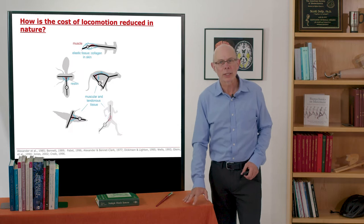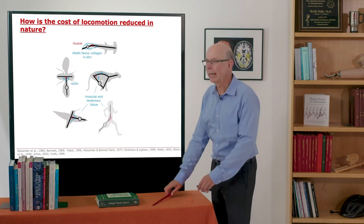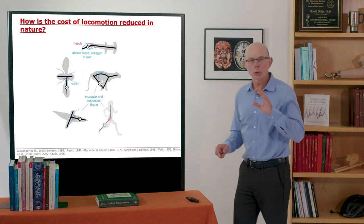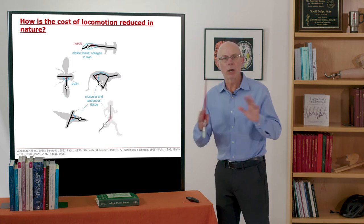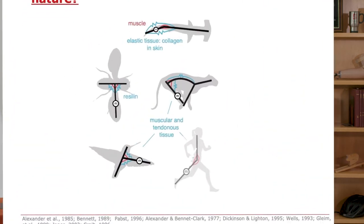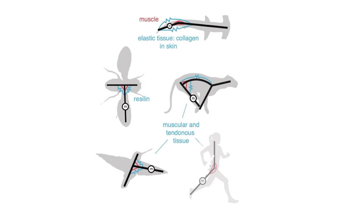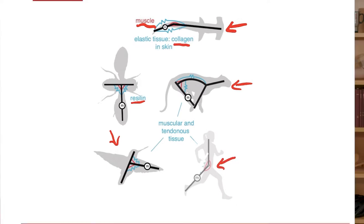Now how is the cost of locomotion reduced in nature? It's reduced by having parallel passive tissues. So if you look in this shark here, they have muscle, but then they have collagen that is in parallel with their muscles that helps them store and return elastic energy. Same is true for insects, for some galloping animals here, for birds, but in humans you see less passive elastic tissue in parallel with muscle.